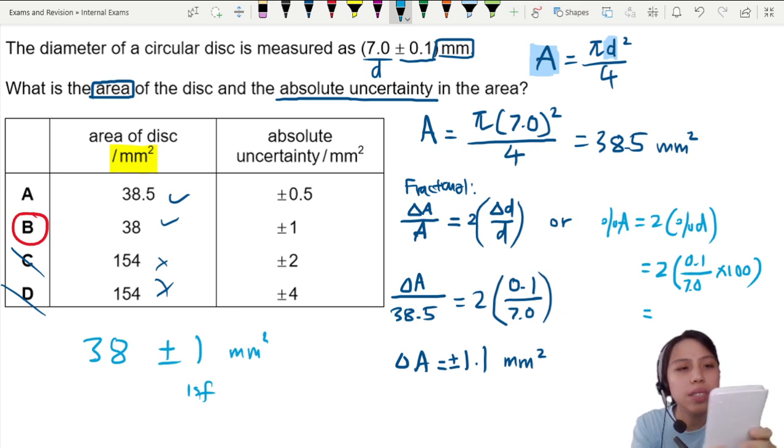0.1 over 7 times 100 times 2. It's about 2.86 percent.